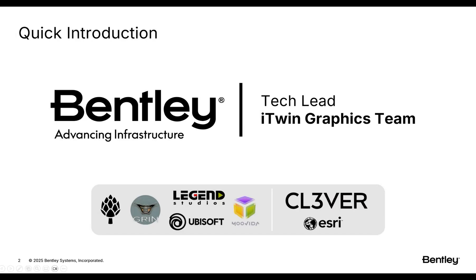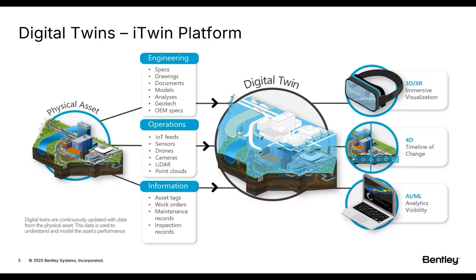Let's start talking about digital twins. A digital twin is the digital representation of a physical asset. Imagine you want to build a road, highway, or bridge — you take all the drawings, documents, scans, cameras, sensors, and all the information you have, and with that you create a digital twin in the cloud so everyone can access the same information at the same time. The information is federated, so you can visualize it, consult schedules to know when things will be constructed and by whom, and do AI analytics. This digital twin helps in building and maintaining the physical asset.